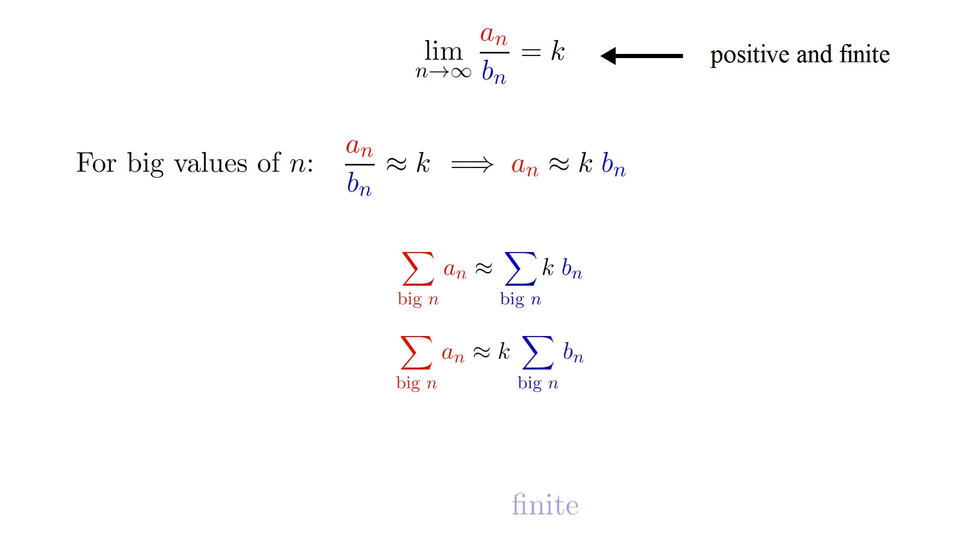On the other hand, if the sum of the b series is finite, then the right-hand side becomes k times something finite. And since k is also finite, the product must be finite, and hence the sum of the a series is also finite. So both the b series and the a series are convergent.